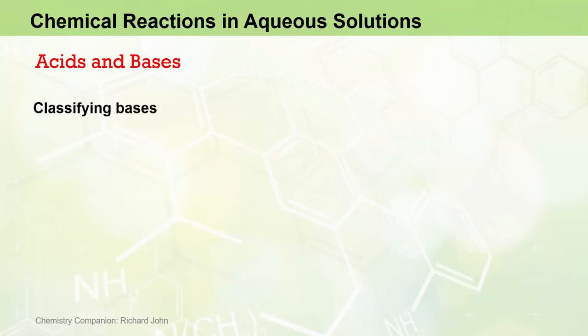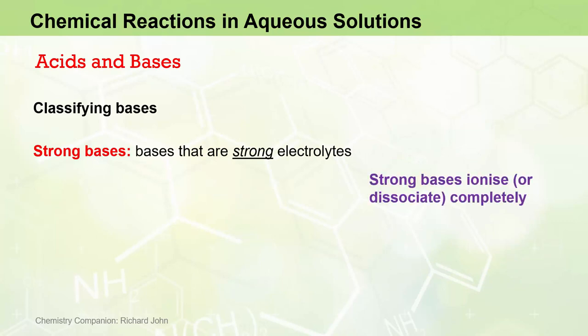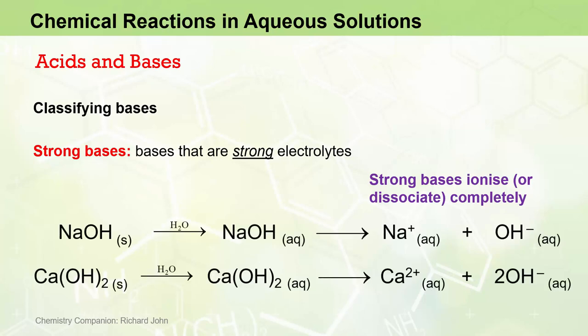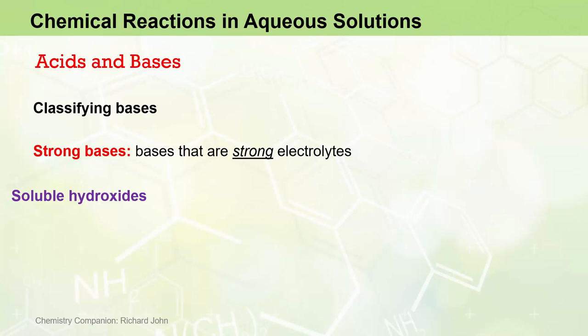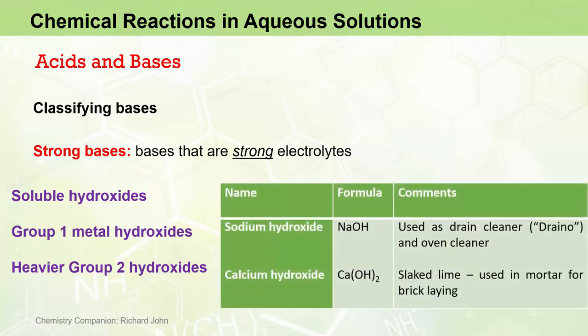Like acids, bases can also be classified as strong or weak. Strong bases are bases that are strong electrolytes, and they therefore ionize or dissociate completely when dissolved in water. And the two examples given earlier, sodium hydroxide and calcium hydroxide, are examples of strong bases. In fact, all of the soluble hydroxides are strong bases, including all group 1 metal hydroxides and the heavier group 2 metal hydroxides. Some applications of strong bases are noted here, with sodium hydroxide, sometimes known as caustic soda, used commercially as a drain cleaner and an oven cleaner, and calcium hydroxide, otherwise known as slaked lime, is used for mortar and bricklaying.